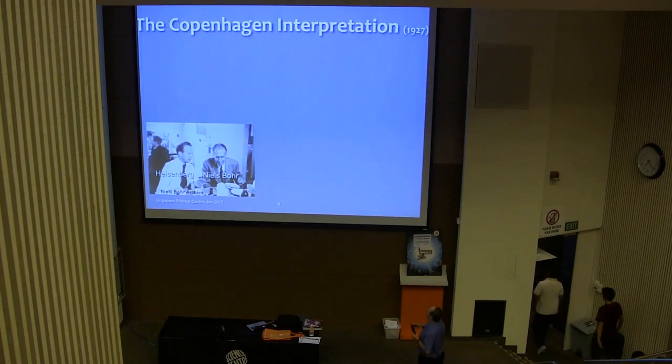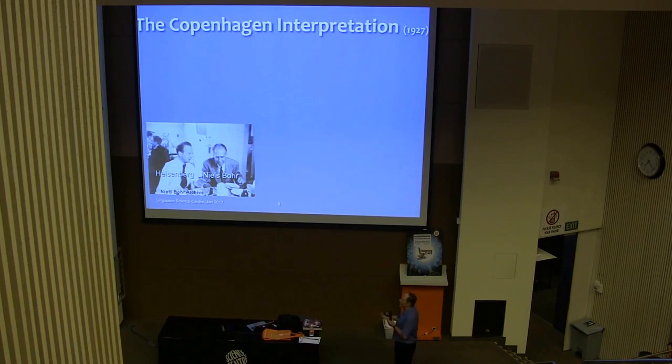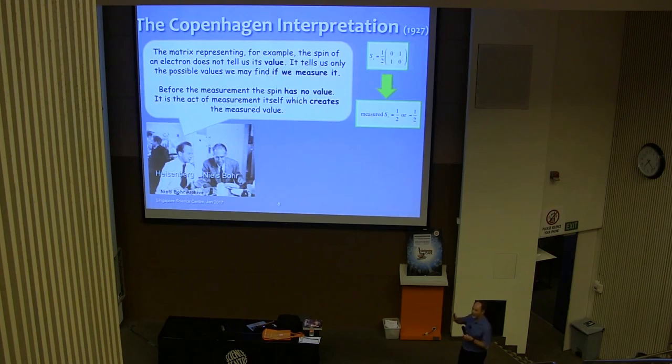So as I said, this seems like a pretty crazy idea and physicists, as soon as it came about, they were struggling to understand what did it mean. And so Heisenberg got together with his slightly older colleague Niels Bohr, and Niels Bohr had an institute in Copenhagen and so the interpretation they came up with was called the Copenhagen Interpretation. And this was sort of first set out in 1927.